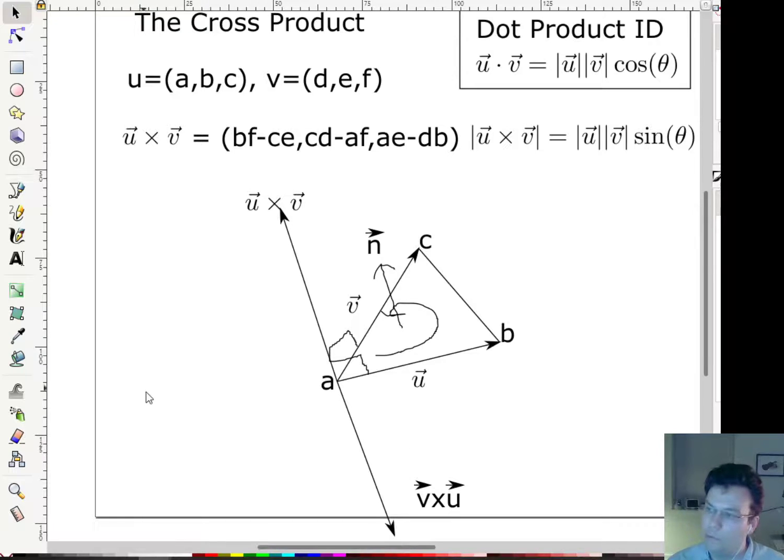And so we can compute this normal, given these three points, by taking b minus a and c minus a, and then doing the cross product. So if we specify a, b, and c, then the normal direction, not necessarily unit normalized, but a vector that points in this direction, is (b-a) cross (c-a).